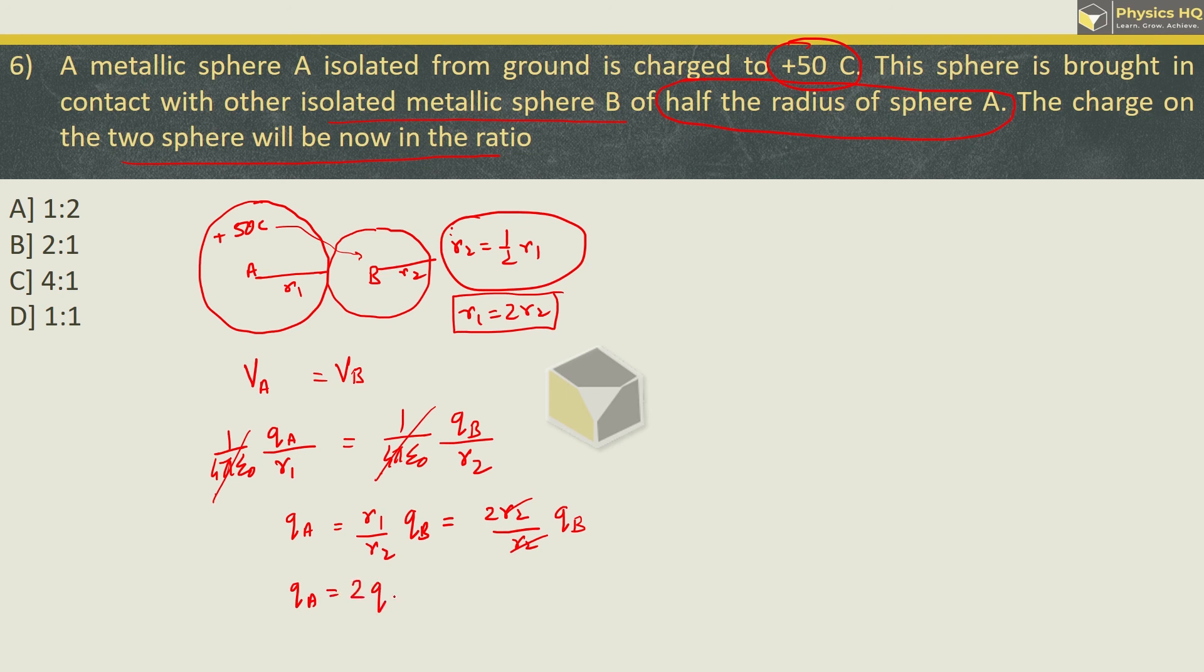Now we already have r1 equal to 2 times r2, so 2 times r2 upon r2 into qB. So we got charge on A will be twice the charge on B. Or you can say the ratio of charges on A and B will be equal to 2 is to 1. So correct option is option B. Hope you all understood this.